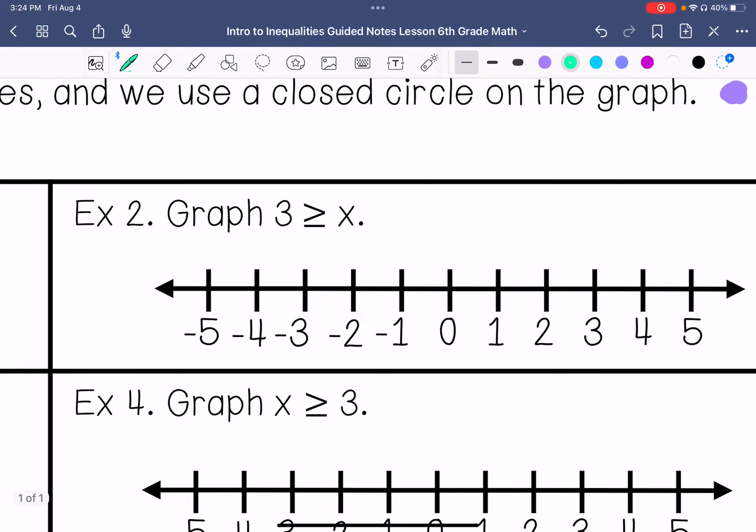Example number two. I like to rewrite this as x is less than or equal to 3. So I'm going to use a closed circle because it's less than or equal to, so it includes 3. And then it's anything also less than 3. I also notice that when my x is on the left, my arrow points the direction that the pointy part of this inequality is facing.